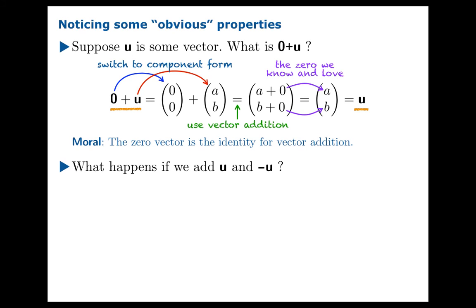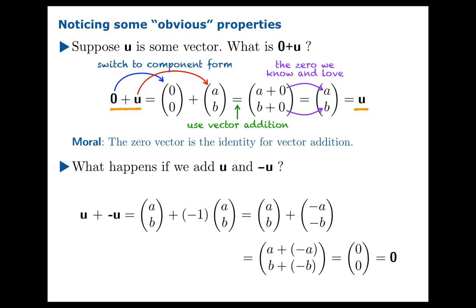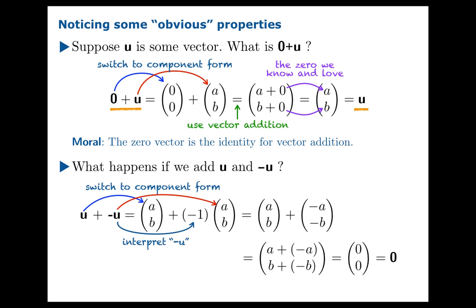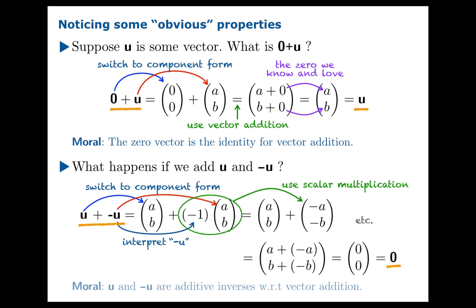Here's another property you should think about: what happens if you add u and negative u? We write out the calculation, substitute in components, and interpret negative u properly as scaling by negative 1. Applying scalar multiplication and filling out the rest of the argument, u plus negative u really does give you the zero vector. The moral is that u and negative u are additive inverses with respect to vector addition. You should be familiar with all these properties, be able to use them efficiently, and if pressed, be able to figure out why they're true using the definitions — don't rely on just saying it's obvious.